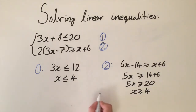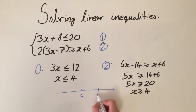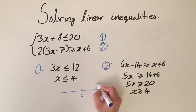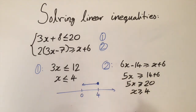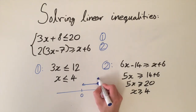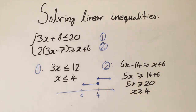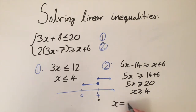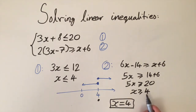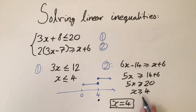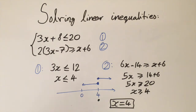Looking at the number line with 4 marked: inequality 1 says we want all values less than or equal to 4, and inequality 2 says we want all values greater than or equal to 4. The only value satisfying both is x equals 4. This is actually a common mathematical technique: if we can show something is both less than or equal to and greater than or equal to a number, it must equal that number.